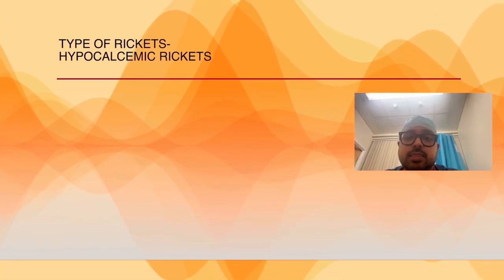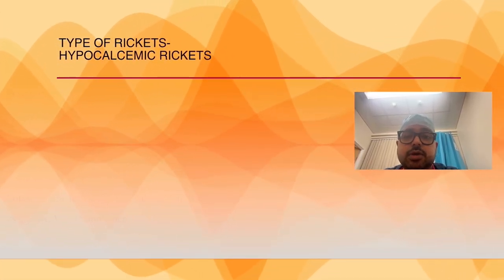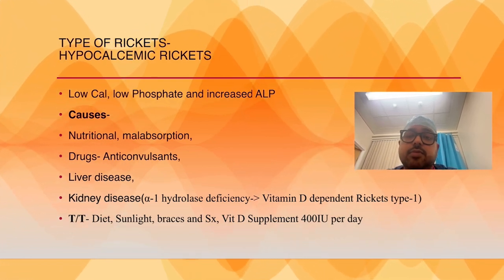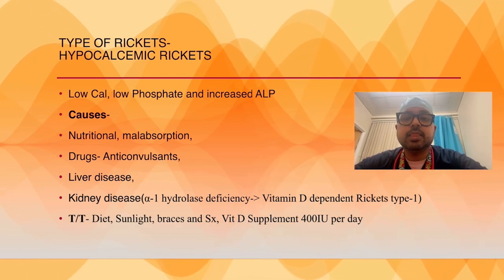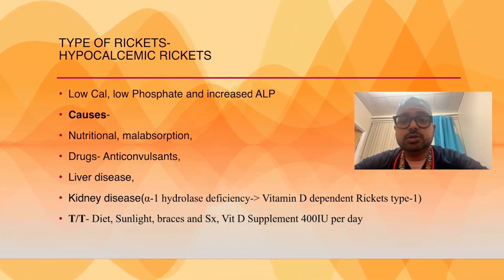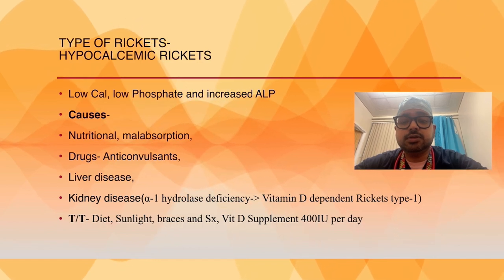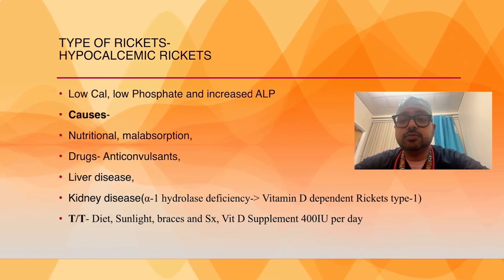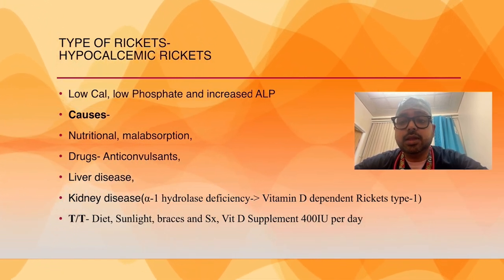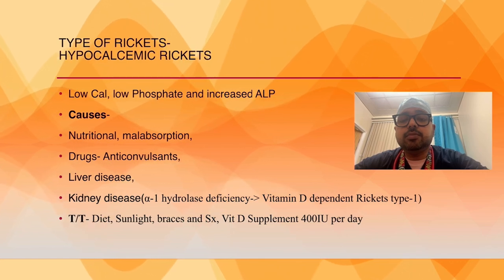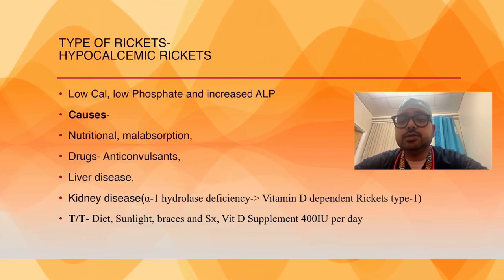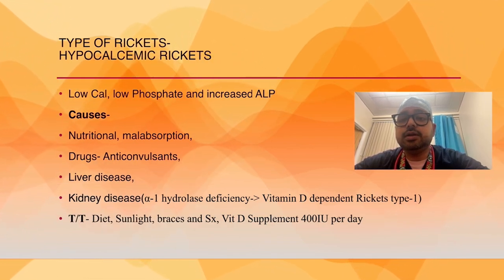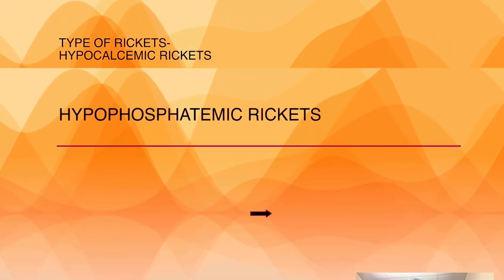DEXA scan can measure low bone density. Type of rickets: most common is hypocalcemic rickets, where calcium level is low, phosphate level is low, and alkaline phosphatase is increased. Causes include malabsorption, nutritional deficiency, drugs like anticonvulsants, liver disease, kidney disease where alpha-1 hydroxylase deficiency leads to vitamin D dependent rickets type 1. Treatment: diet, sunlight, braces, surgical correction for severe cases, and vitamin D supplements 400 international units per day.